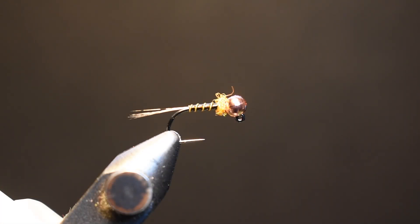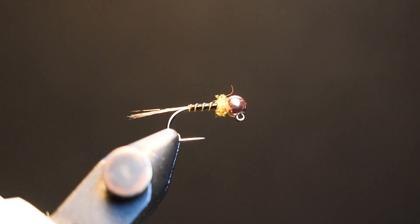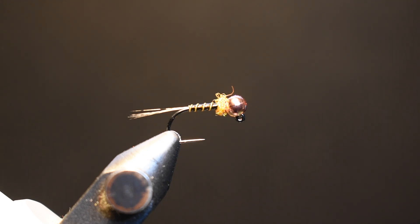Hey, what's going on everybody? Norman Maktima, Under the Lamp. Today we're going to do a thread Frenchie. This pattern was developed by Lance Egan, and I think you can find it in Umpqua Feather Merchants. I'll show you how to tie it and my variation. I don't know if these colors are what you can find through Umpqua, but let's get to it.